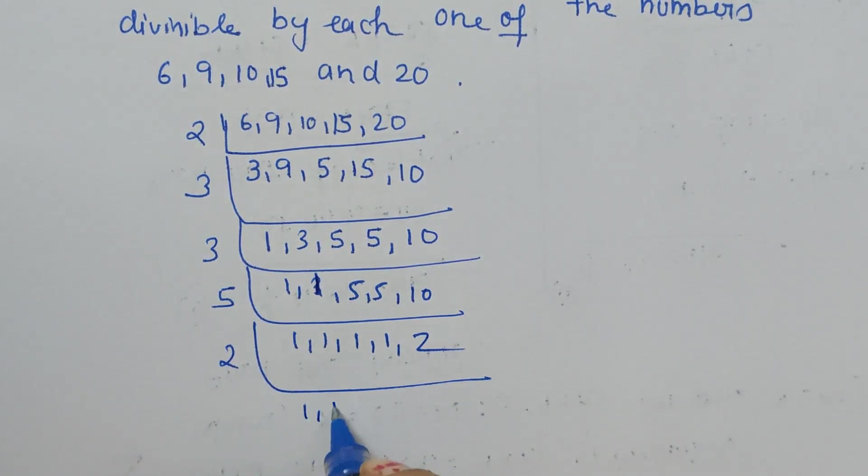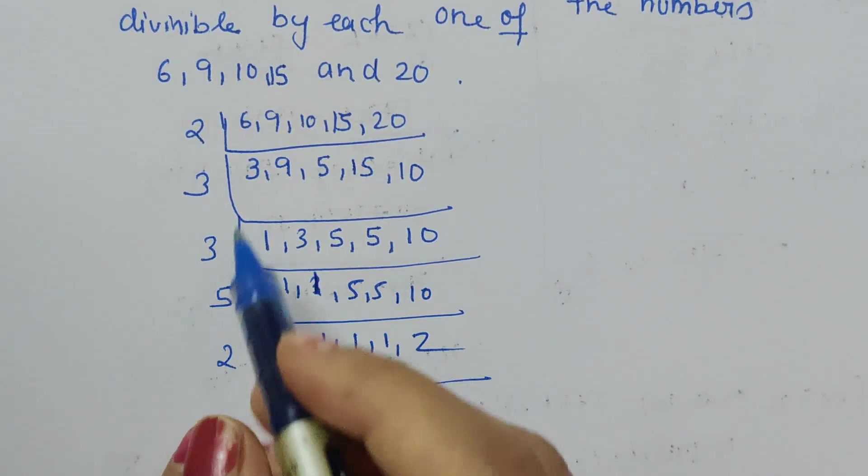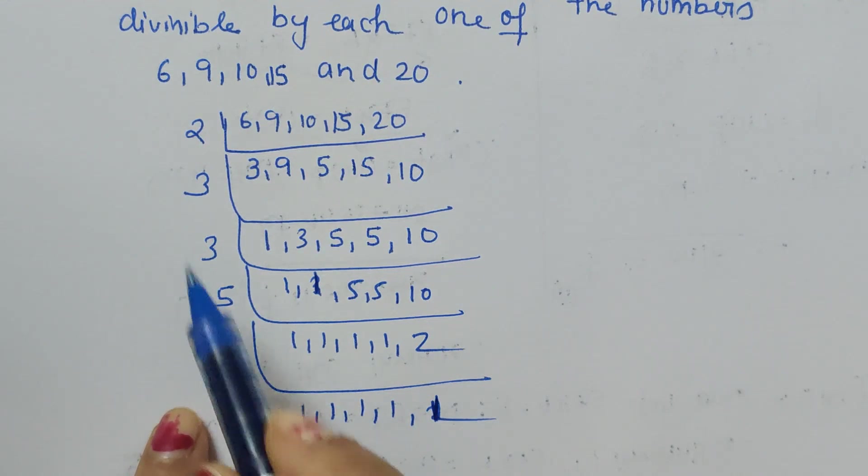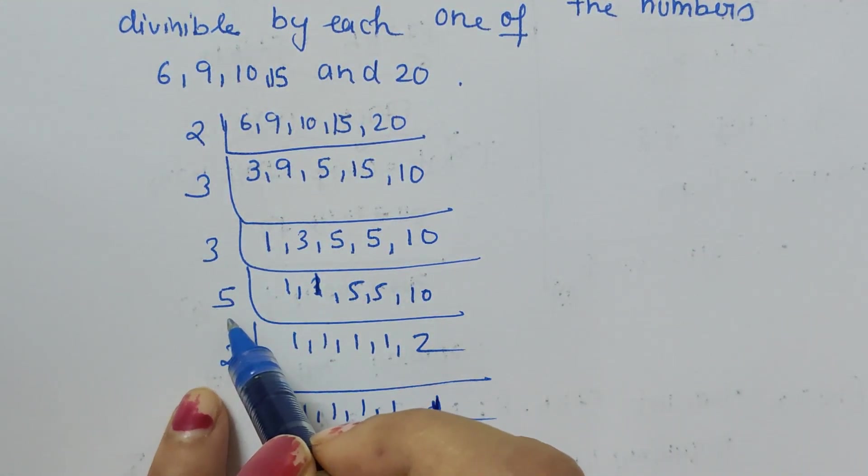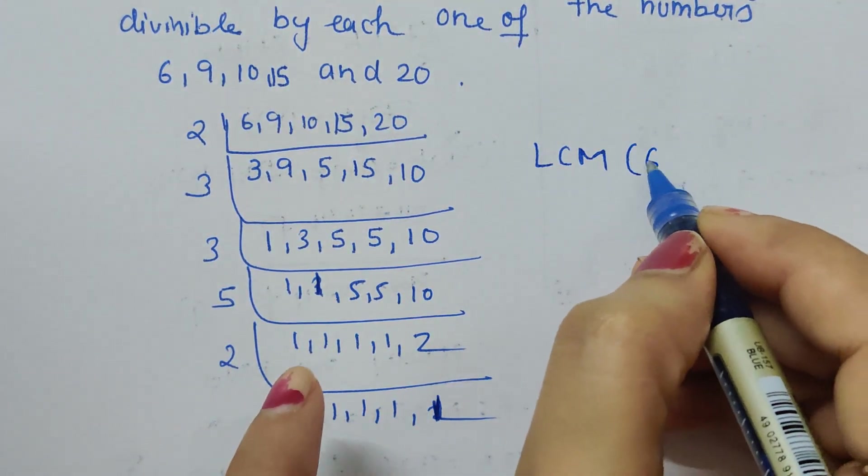Now next higher prime number 5: 1, 1, 1, 1, 2 goes into 10, and then again by 2. So this is how we find the LCM. We just have to multiply all the prime numbers over here: 2 times 3 is 6, times 3 is 18, 18 times 10 is 180.